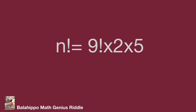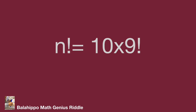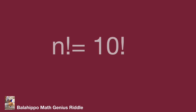Finally, we note that 2 times 5 equals 10, so the equation becomes n factorial equals 10 times 9 factorial, which equals 10 factorial. Therefore n equals 10. That's the answer! Hope you got this interesting result and enjoyed the video. Thank you.